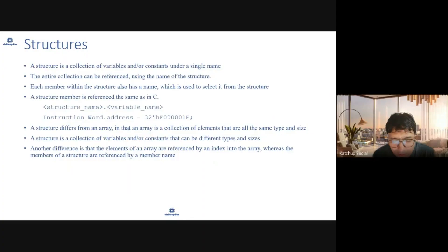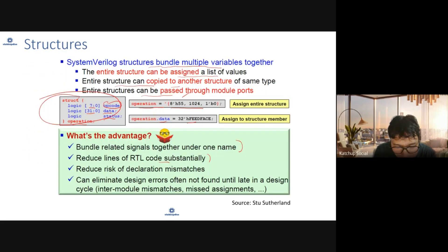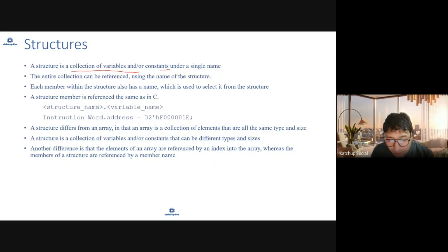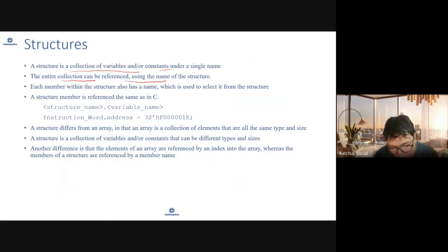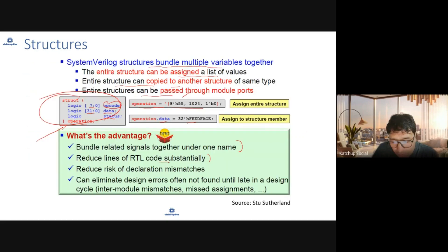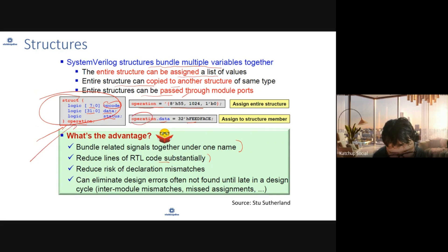A structure is a collection of variables or constants combined under a single name, so you can refer to them together using the structure name. The entire collection can be referenced using the name of the structure. For example, I defined a structure called 'operation', and within it there are three specific variables: code, data, and status.